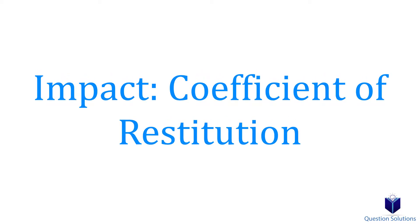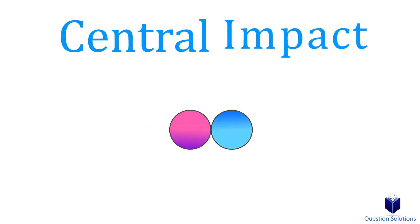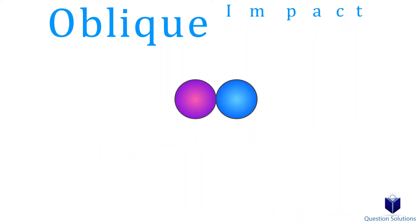Let's talk about impact. Let's say we have two particles like this and they impact each other right here. So they came and hit each other head on in a straight line through their center of mass — this is called central impact. If, for example, they hit like this without it being head on, it's called oblique impact.